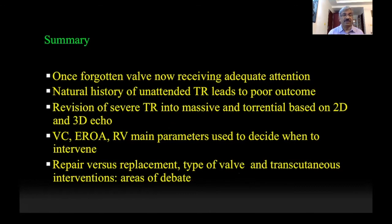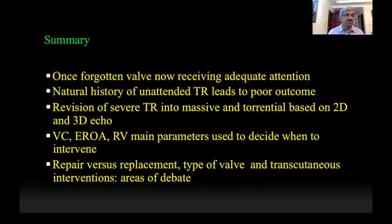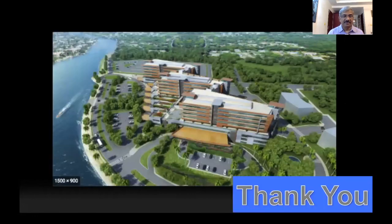In summary, the tricuspid valve, once considered a forgotten valve, is now receiving a lot of attention. The natural history of unattended tricuspid regurgitation is poor. There is a new revision of severe TR into massive and torrential based on 2D and 3D echocardiographic findings. Severity is assessed based on the vena contracta, effective regurgitant orifice area by both 2D and 3D, and regurgitation volume — these are the main parameters. Controversy still exists whether to repair or replace, and if replacement, whether to use a tissue or bioprosthetic valve. Thank you very much.